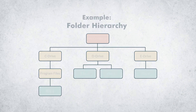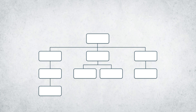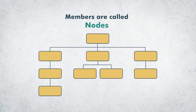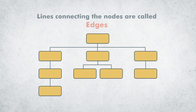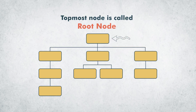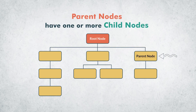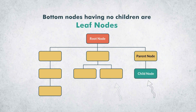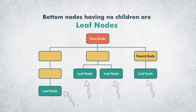In a tree data structure, the members are called nodes, and lines connecting the nodes are called edges. The topmost node is called the root node. Parent nodes have one or more child nodes. The bottom nodes having no children are called leaf nodes.